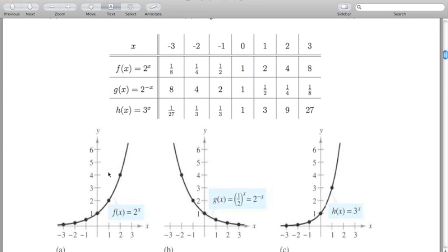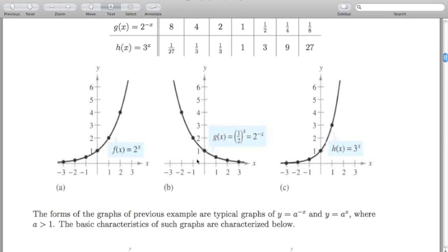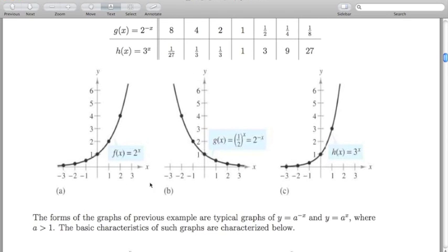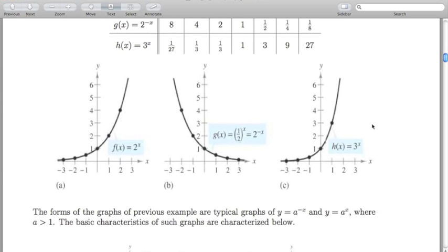These three graphs are the general forms of exponentials. The forms of the graphs of these three examples are the typical graphs of y equals a to the minus x and y equals a to the x, where a is strictly greater than 1. These are the general forms of exponentials that might be manipulated, shifted, stretched, or flipped based on whatever case you're looking at.